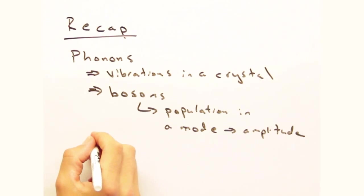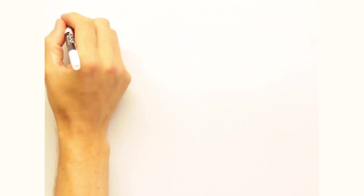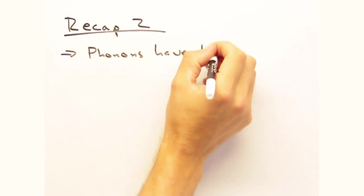Phonons also act like simple harmonic oscillators, in that the energy of a vibrational mode is n plus a half, h bar omega, where n is the phonon population in that mode. In part 2, we learned why phonons have kinetic energy, but no linear momentum.